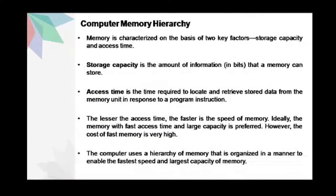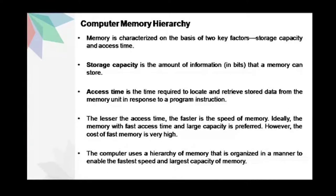Let us look at the different aspects of computer memory. Computer memory is characterized on the basis of two key factors: storage capacity and access time. Storage capacity is the amount of information that a memory can store, while access time is the time required to locate and retrieve stored data from the memory unit in response to a program instruction. The lesser the access time, the faster will be the speed of memory. Ideally, memory with fast access time and large capacity is preferred. However, the cost of fast memory is very high. The computer uses a hierarchy of memory organized to enable the fastest speed and largest capacity.